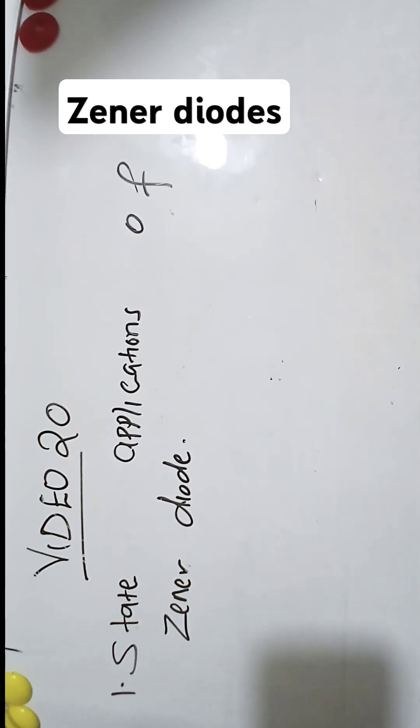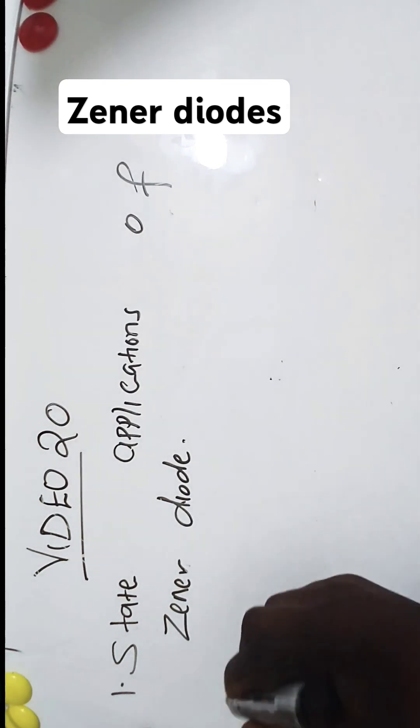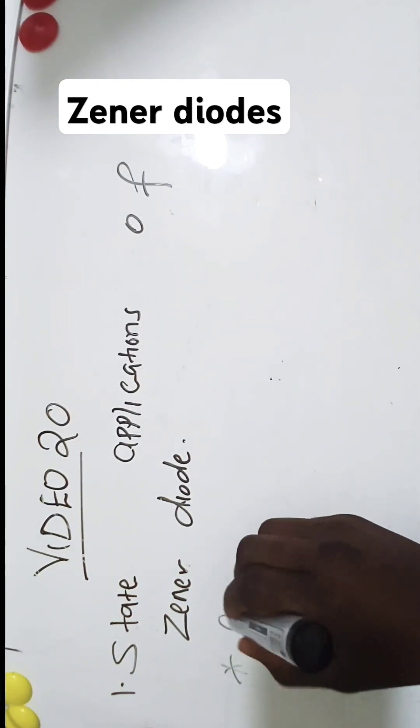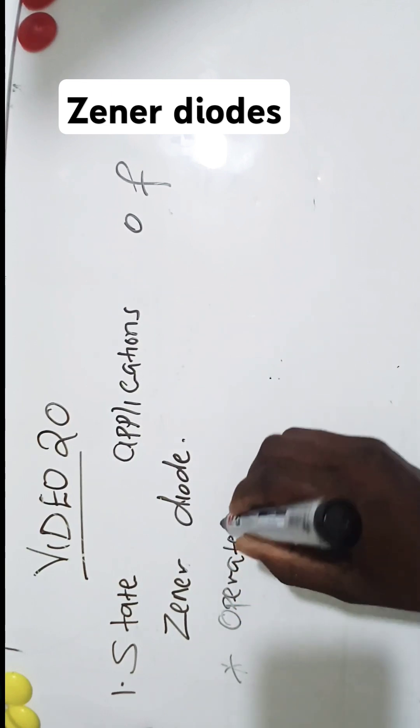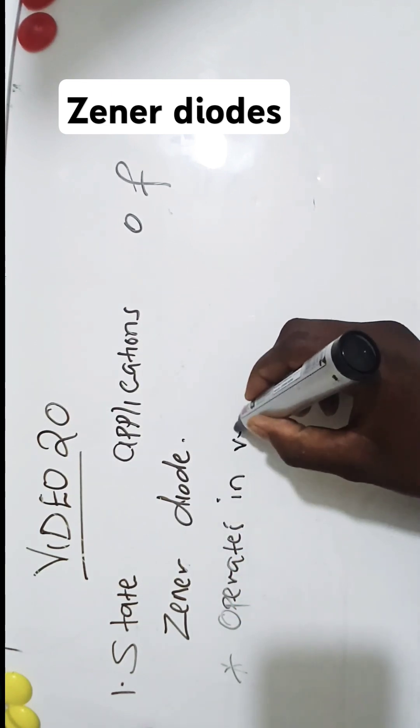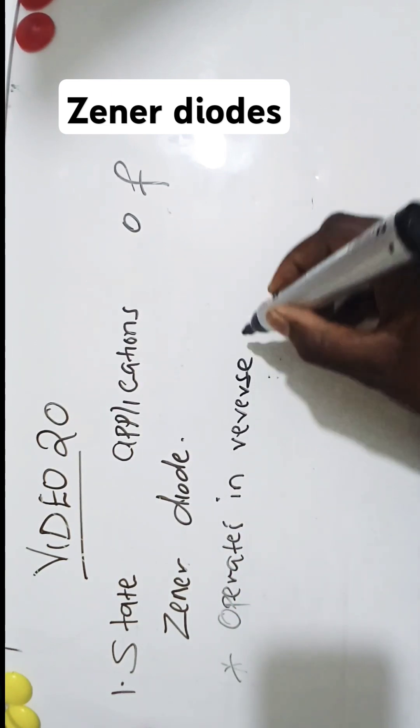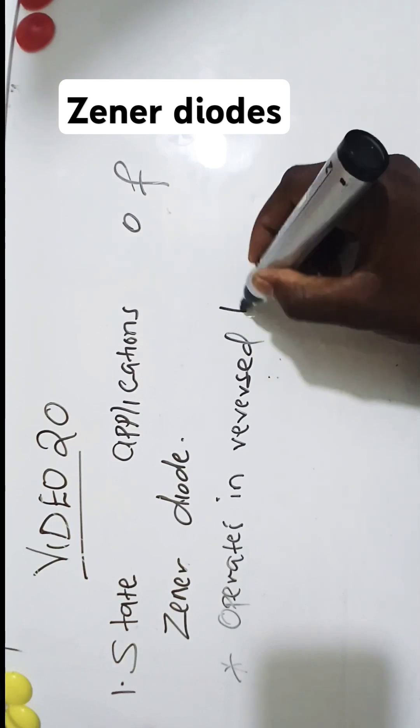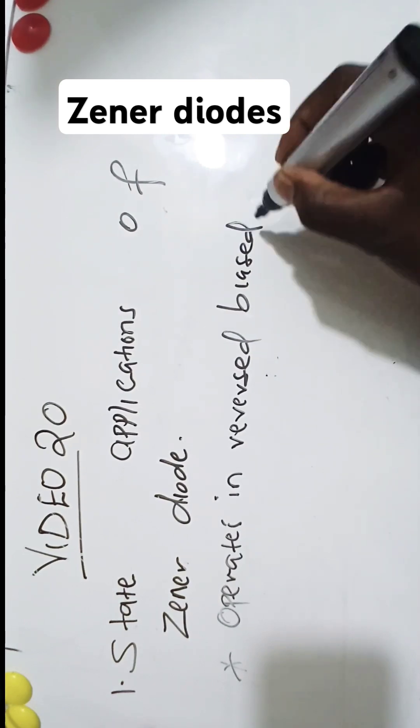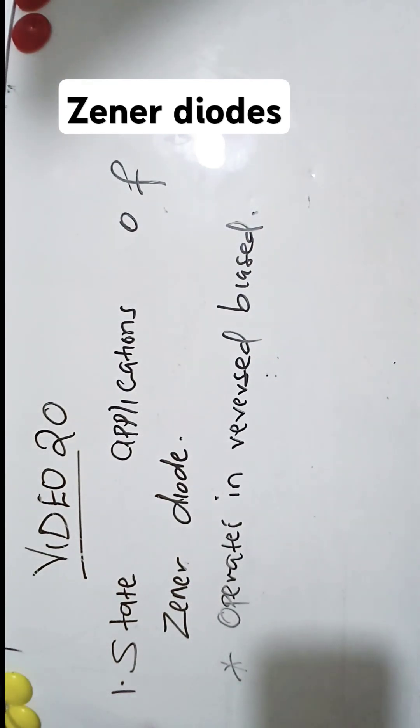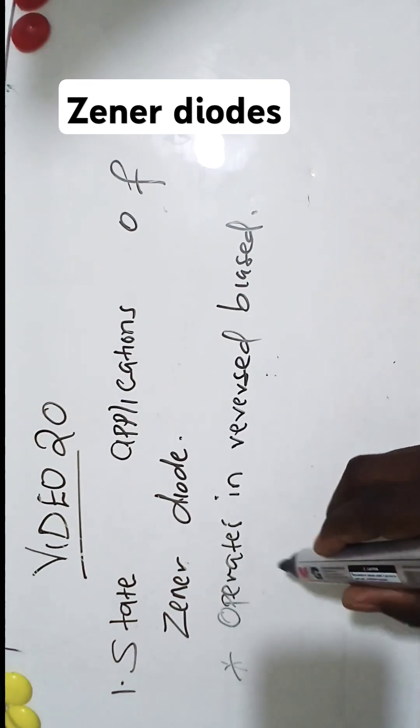A Zener diode is a specialized semiconductor diode which is designed to operate in reverse bias. It operates in reverse bias. This is its symbol.